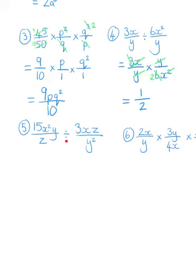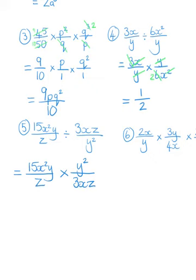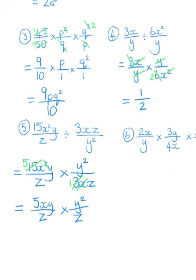Question 5 — once again we have fractions that are being divided, so let's start by sorting that out. We've got 15x squared y over z, and we're changing it to the inverse fraction to multiply. Let's simplify: 15 and 3 — 3 goes into both, leaving 5 and 1. Then x squared and x cancel, and y and y cancel, and z and z cancel. So I've got 5xy over z times by y squared over z.